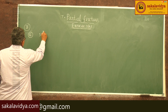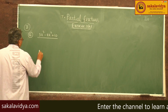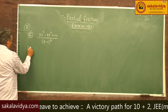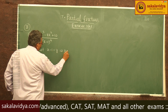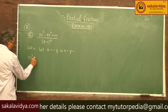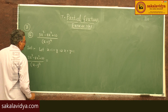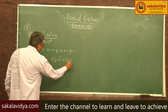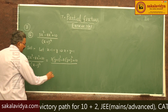Sixth problem: resolve 3x cubed minus 8x squared plus 10, divided by (x minus 1) to the power of 4, into partial fractions. Let x minus 1 equal to y, so x equals y plus 1. The expression becomes 3 times (y plus 1) cubed minus 8 times (y plus 1) squared plus 10, all divided by y to the power of 4.